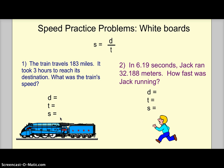Now let's move on to number 2. It's a little more complicated and you can use a calculator if you need to. In 6.19 seconds, Jack ran 32.188 meters. How fast was Jack running? What was the distance Jack ran? What was the time it took him to run that? Plug it in. Distance divided by time. What was Jack's speed?